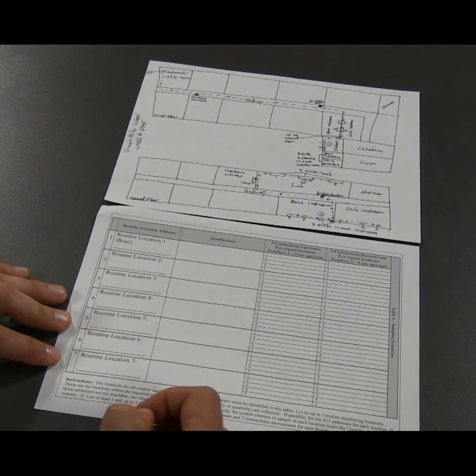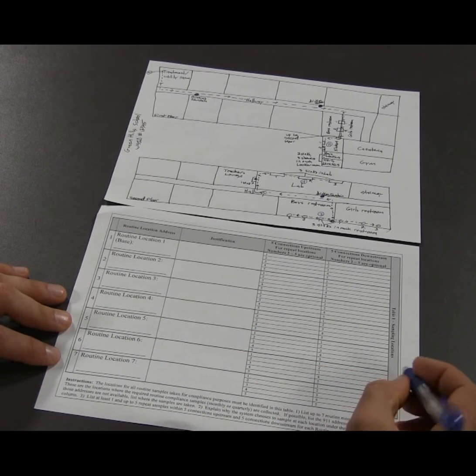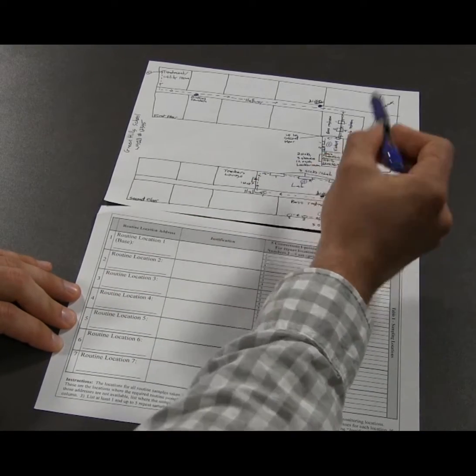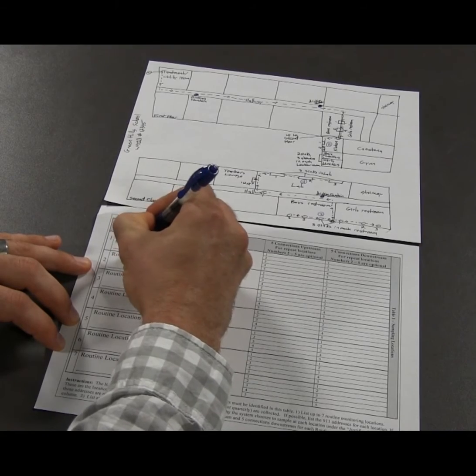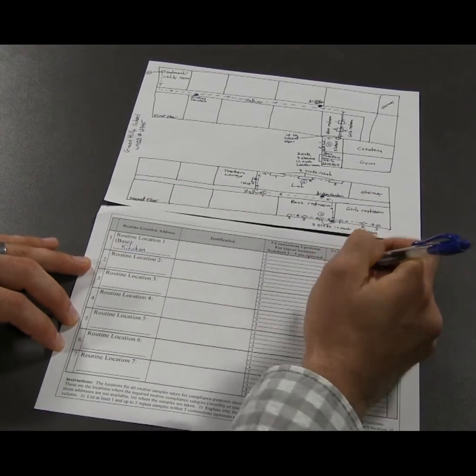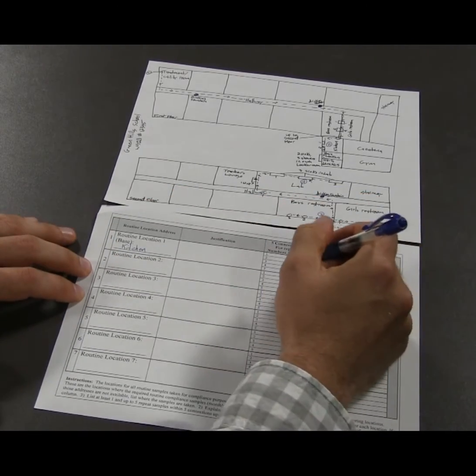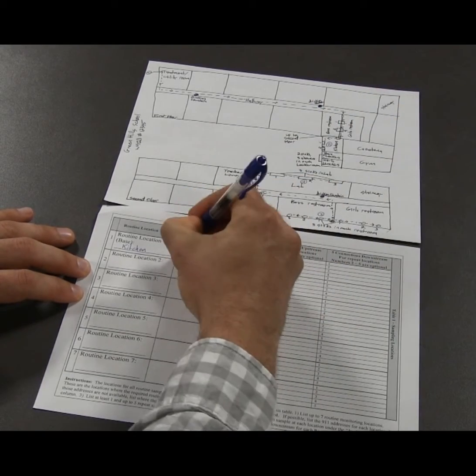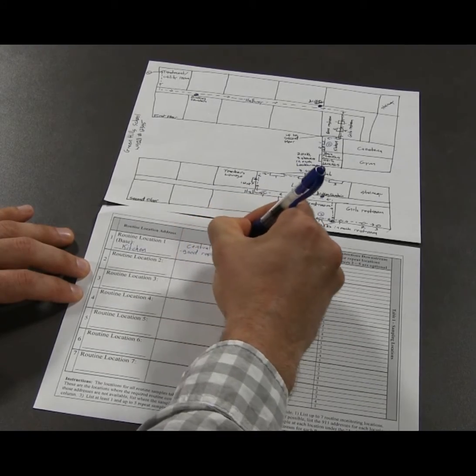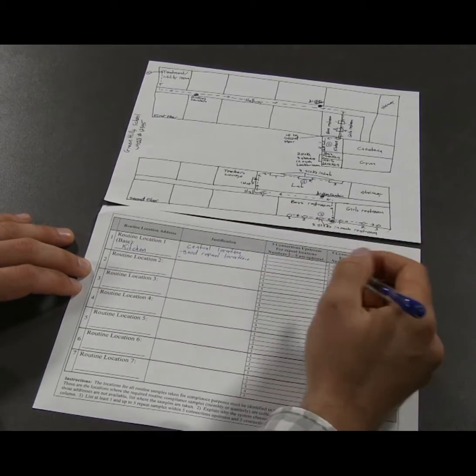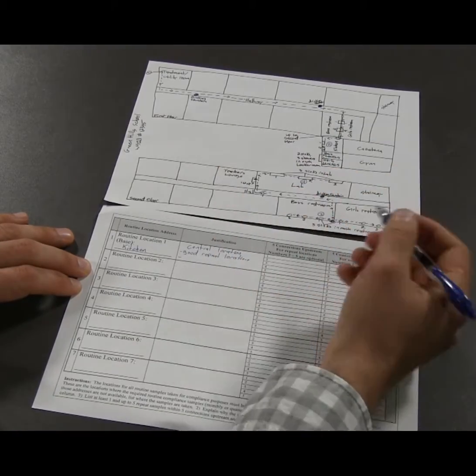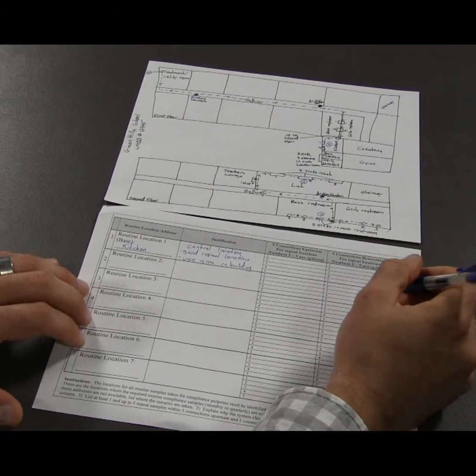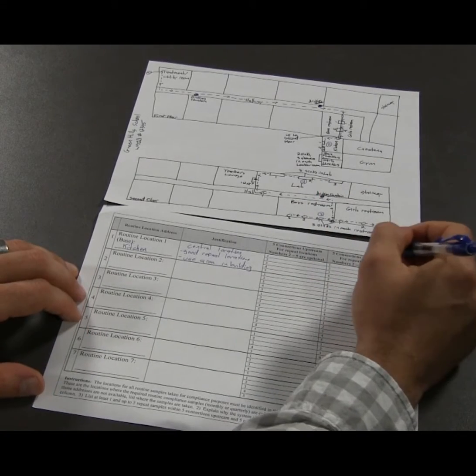Now we're going to go through filling out the routine and repeat sampling location portion of the form. So as I said earlier, we're going to make the kitchen the base location. So we're going to put kitchen in here. We need to write a justification why. Why are we sampling at the kitchen? It's a central location, it's got samples upstream and downstream, and there's a lot of food prep, a lot of drinking. So it's going to be representative of a lot of the use. So you write that all in the justification column.